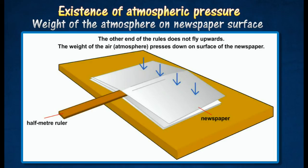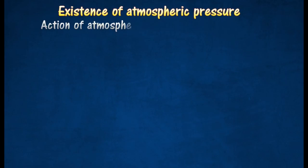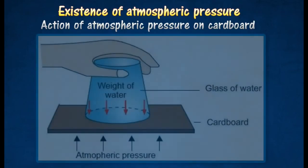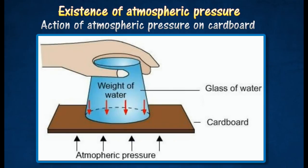The weight of the air presses down on the surface of the newspaper. When the cup is inverted with a tightly fit cardboard at its mouth, the water doesn't leak. The upward atmospheric pressure on the cardboard is strong enough to support the weight of the water in the glass.